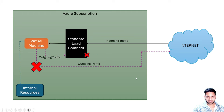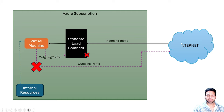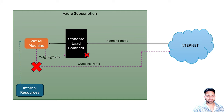Now there is a different scenario. You have a standard load balancer created in your environment and your virtual machine is part of the backend pool assigned to the standard load balancer. In that case, traffic coming from the internet will first go to the standard load balancer, which will then load balance the traffic onto the virtual machine. So the incoming traffic is fine. However, the outgoing traffic to the internet will stop working, because the standard load balancer is secure by default.